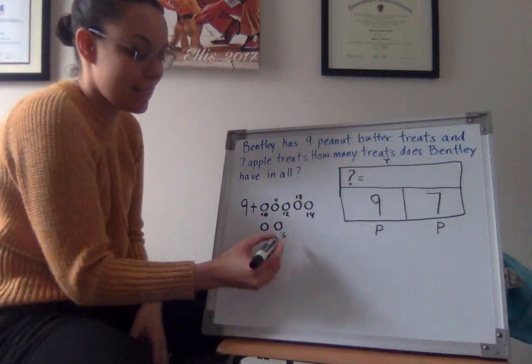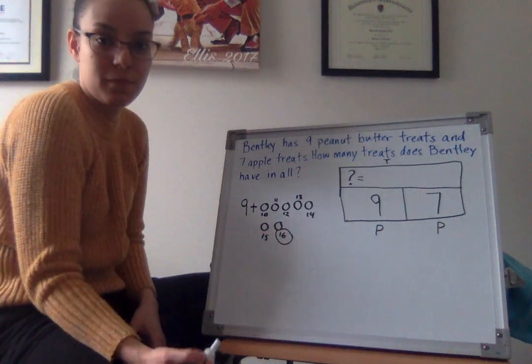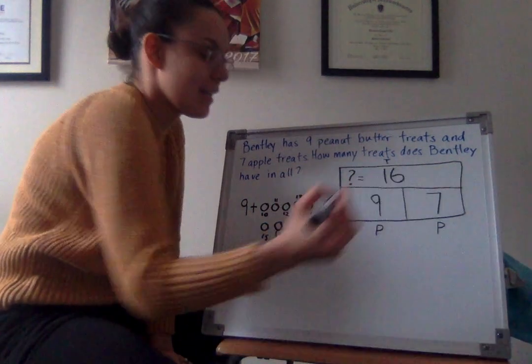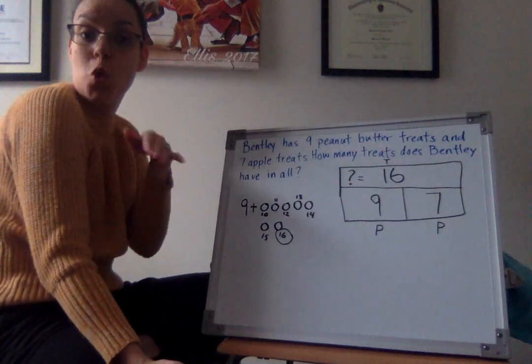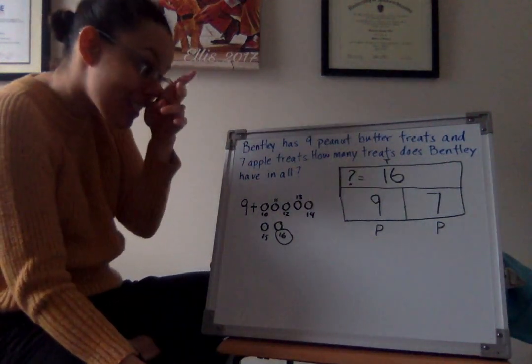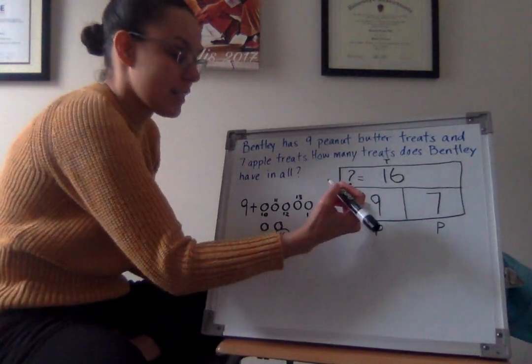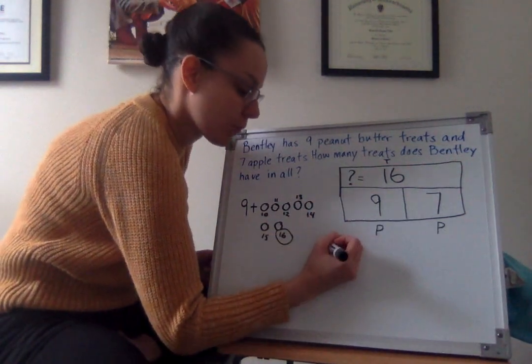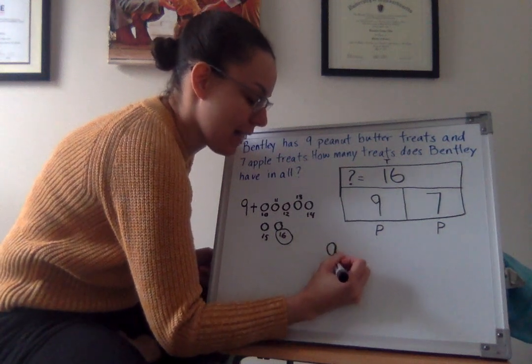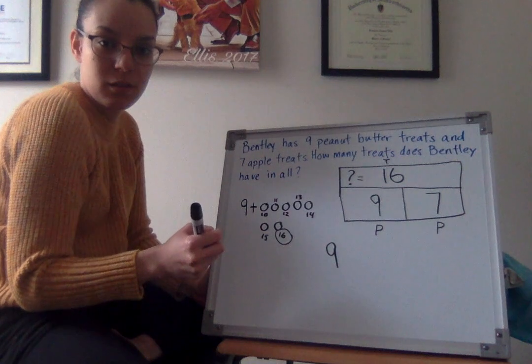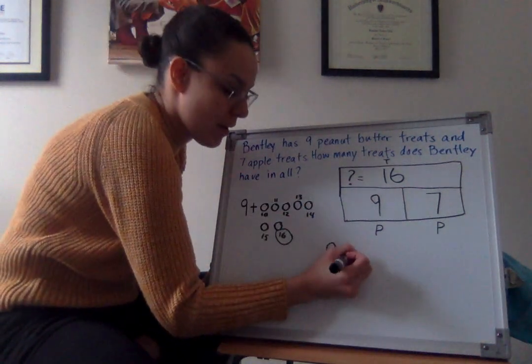What was my missing total? Yeah, 16. Am I done yet? No way. I still need my number sentence. So let's see. We knew that we had nine as my part. What did we do? Did we add or subtract? Yeah, we added. Plus, how many did we add?